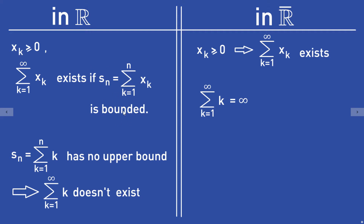In the normal real numbers, we always have to check if the partial sum is bounded. In the case of the extended real numbers, we have to check nothing at all — the only thing that matters is that the terms Xk are non-negative. If this holds true, the infinite sum exists. For example, the infinite sum Σ(k=1 to ∞) k is simply infinity, which is an element of the extended real numbers. So in the normal real numbers the sum doesn't exist, but in the extended real numbers it does.